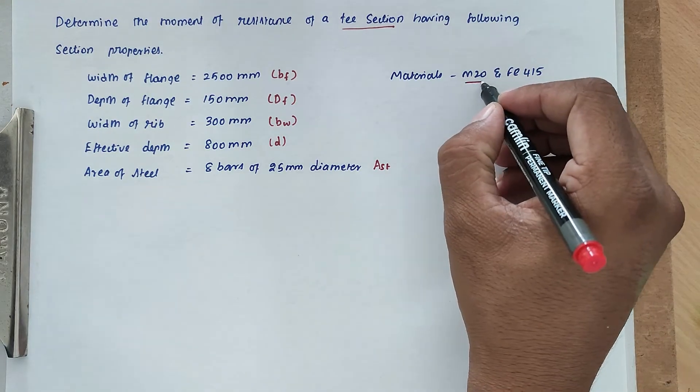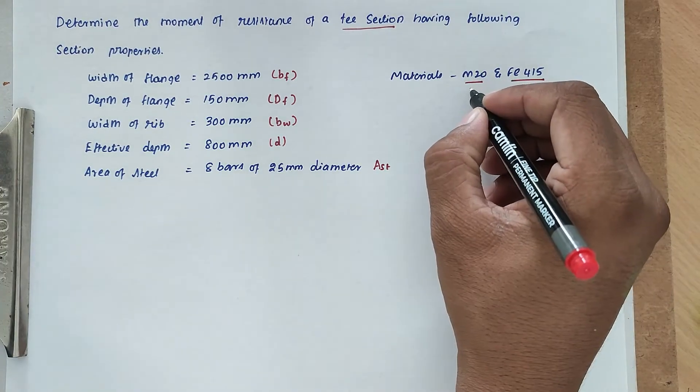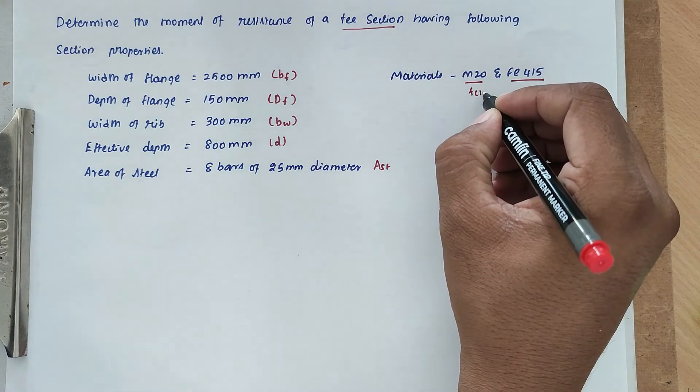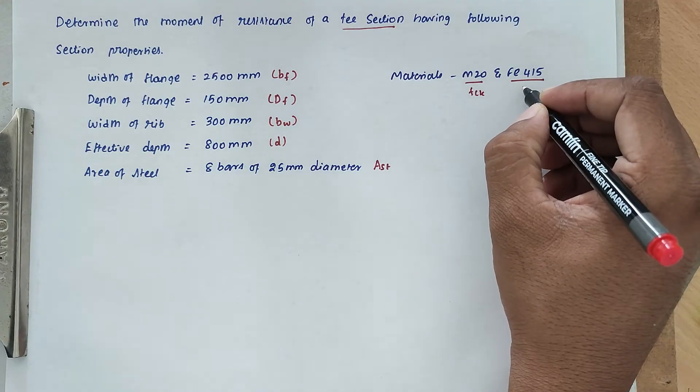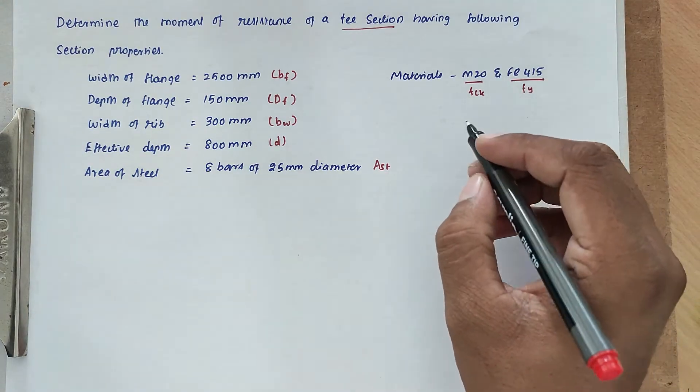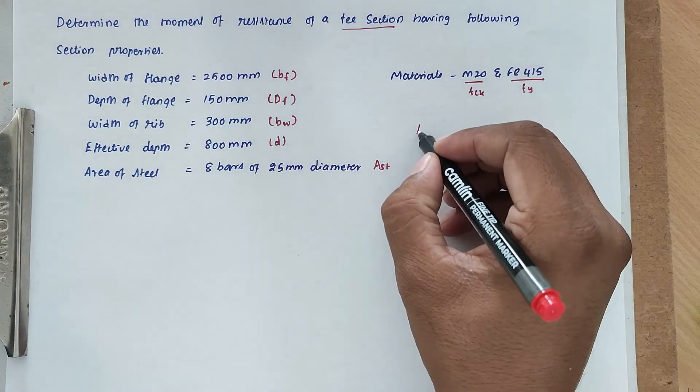Material: M20 Grade Concrete and FE415, that is M20 Grade Concrete FCK and FE415 FY value. So first thing we have to find out the area of steel, that is AST.